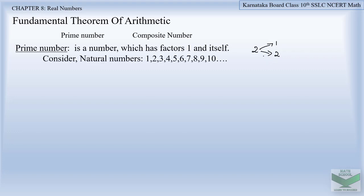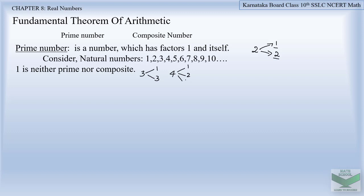If you consider the natural numbers, starting from 1 going up to infinity: the first number 1 is neither prime nor composite because it does not have any factors. Number 2 is a prime number because it has factors 1 and itself. Number 3 also has factors 1 and itself, so it is a prime number. Number 4 has factors 1, 2, and 4 — since it is divisible by more than 2 numbers, it is a non-prime number. Number 5 is divisible by 1 and itself, so it is again a prime number.